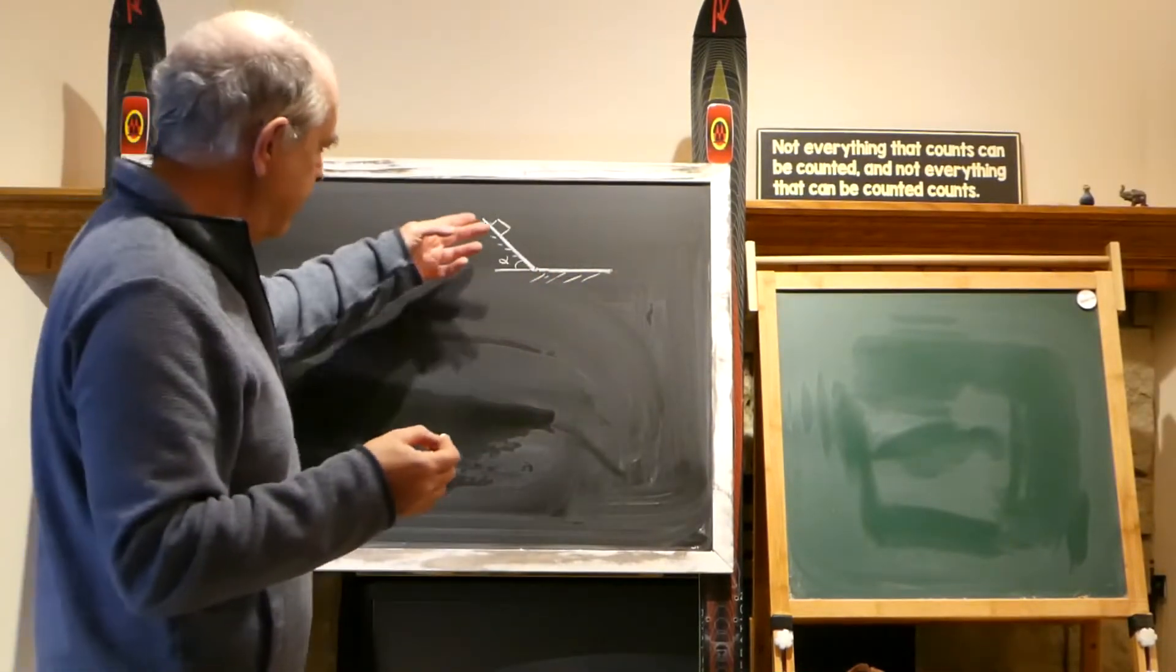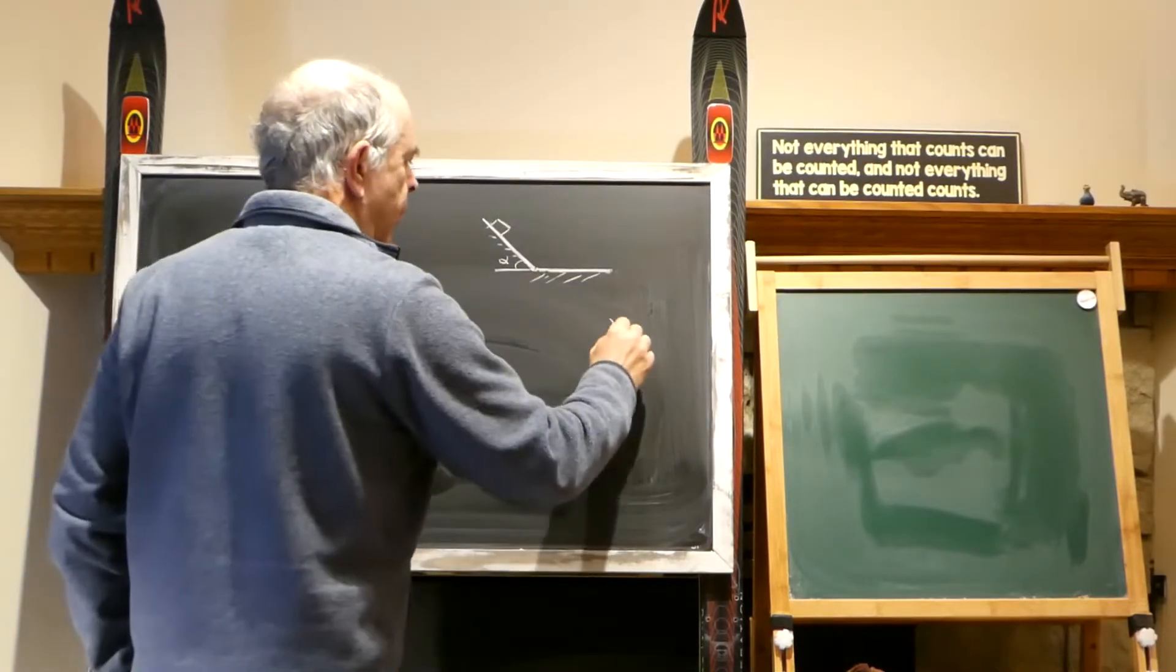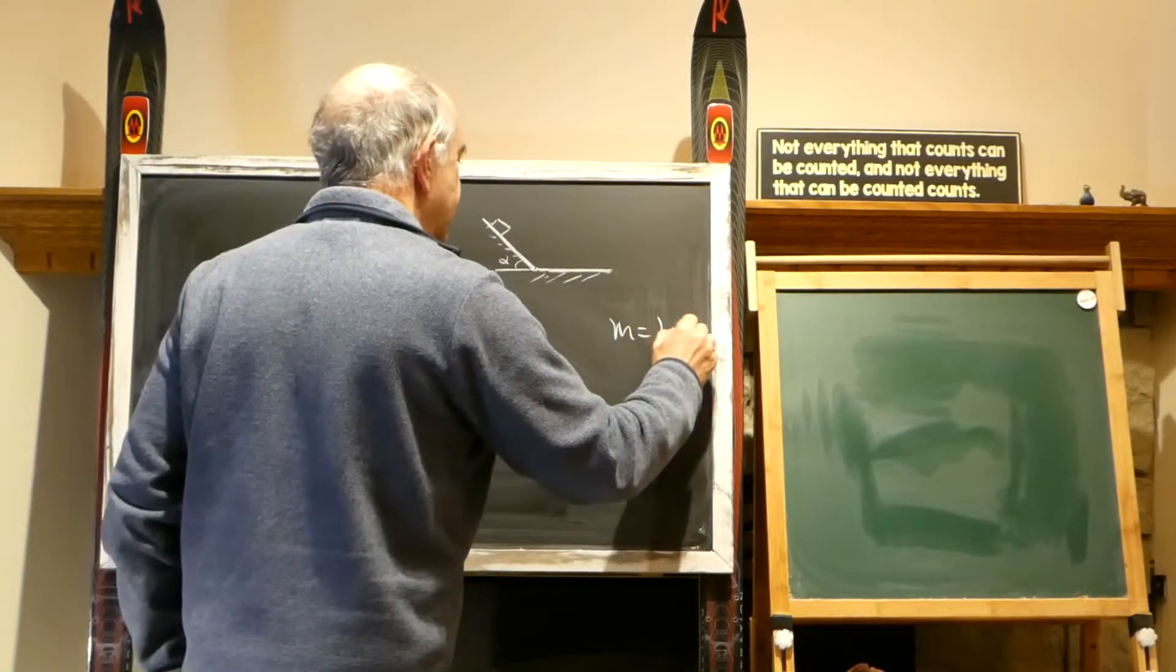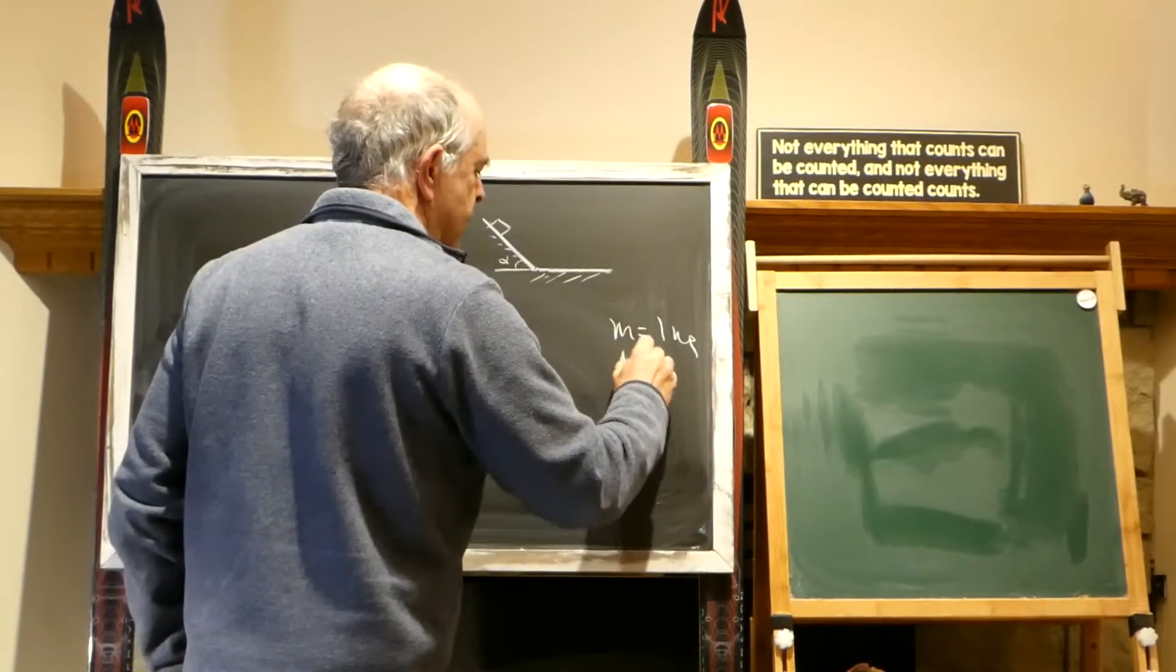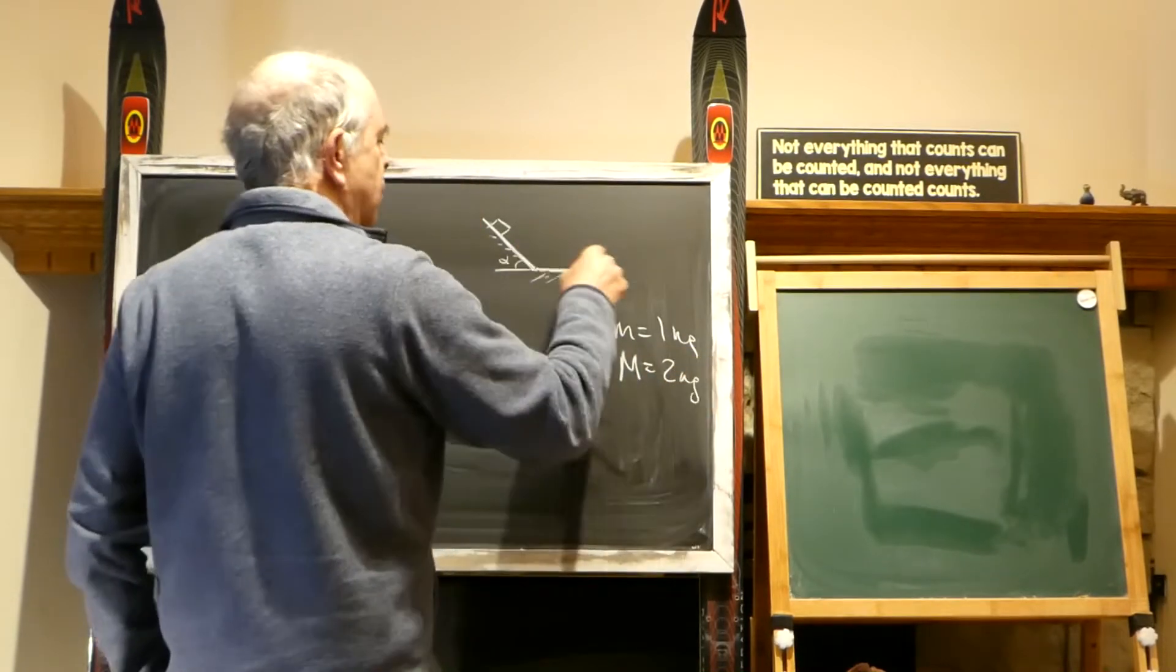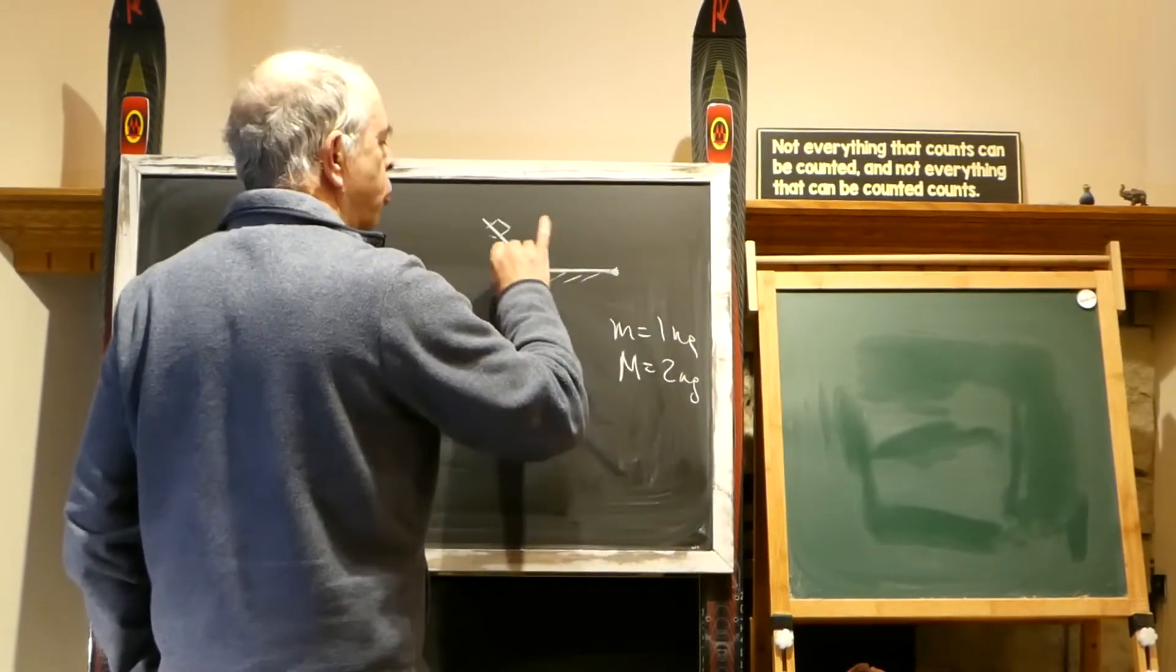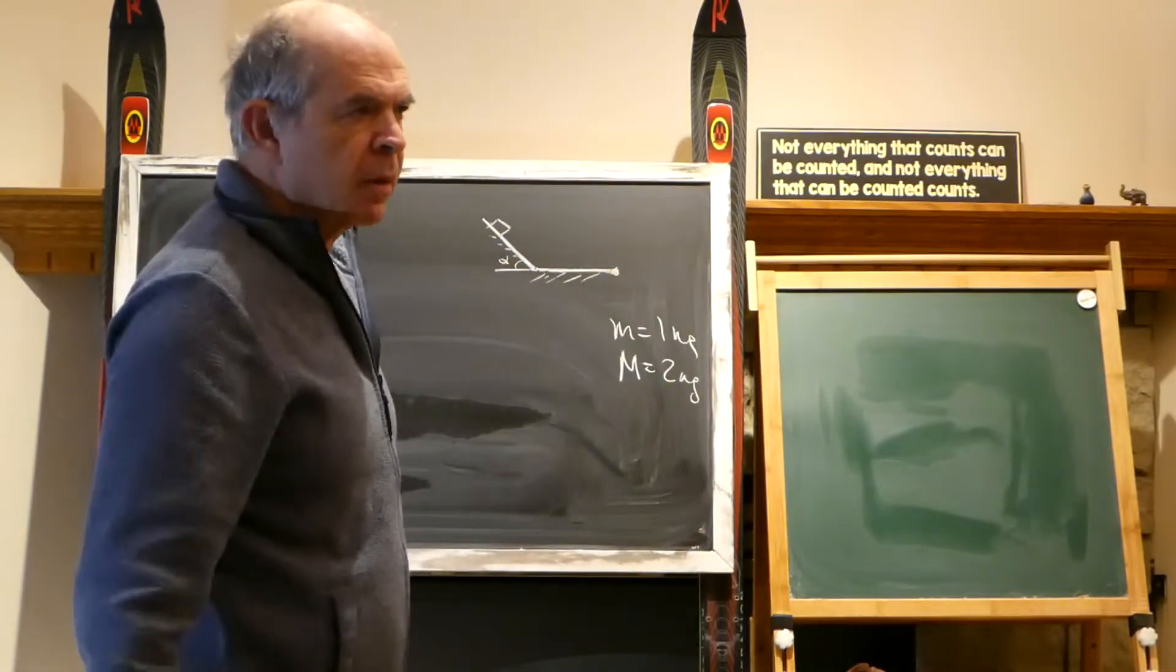And the question is that if there are two bodies, one mass m, let's say one kilogram, and another is m equal let's say two kilograms, where they stop, who will slide more, right?